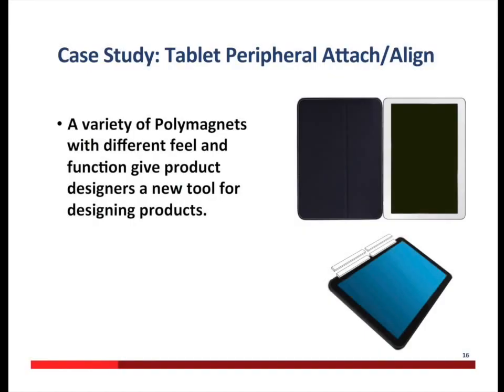Let me summarize the basic points from what I've been talking about with this tablet example. First, polymagnets are available in a variety of shapes and sizes with a variety of functions. Second, these functions are way beyond what a conventional magnet can do — you're no longer limited to simple attract and repel. Third, within the wide variety of functions that polymagnets come in, they're available with variants with different feels for that function. Fourth and finally, you as a product designer can choose the polymagnet with the right feel and function for the product you're designing.